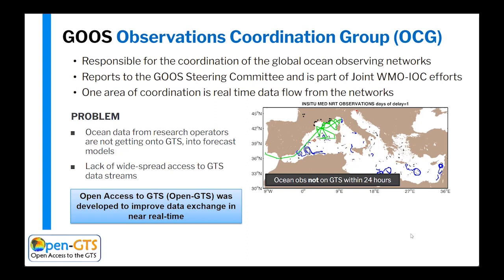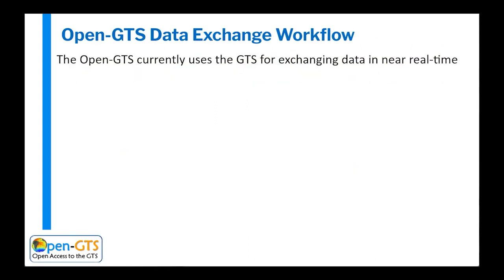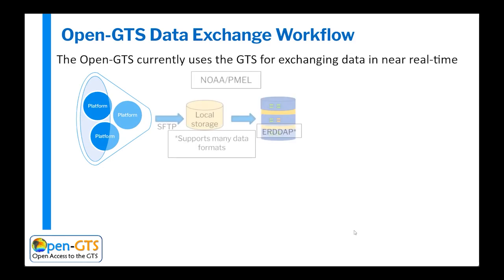The goal was to increase the number of observations available to the operational forecasts in the hopes of improving those forecasts. For those that aren't aware, I'll quickly talk about what the current data exchange workflow is for the OpenGTS. We have platforms out there measuring — perhaps sail drones, perhaps commercial ships. Those platforms make their observations and send them currently to NOAA's Pacific Marine Environmental Lab. We either grab them off SFTP or someone pushes them to us. We then take that data and load it into an ERDDAP service, and the great thing about ERDDAP is that it supports many different formats, making it much easier to work with platform and data providers.